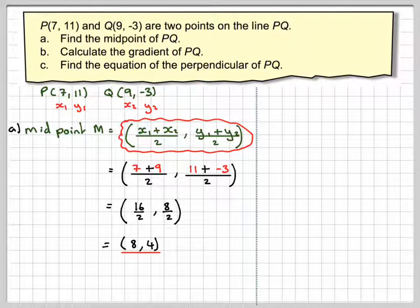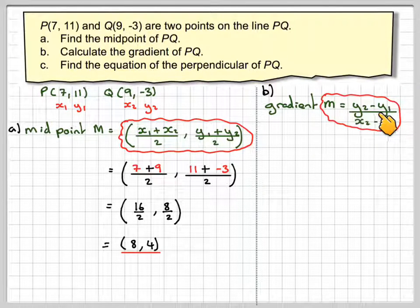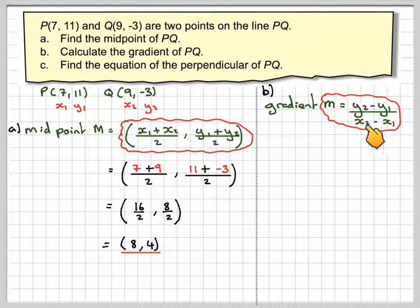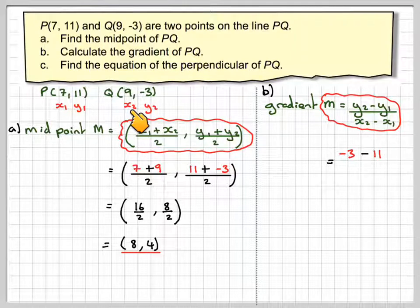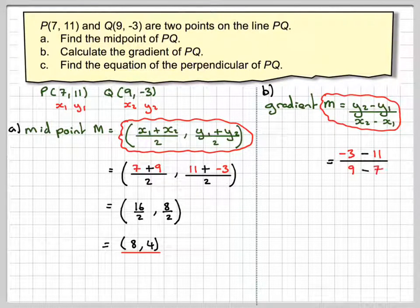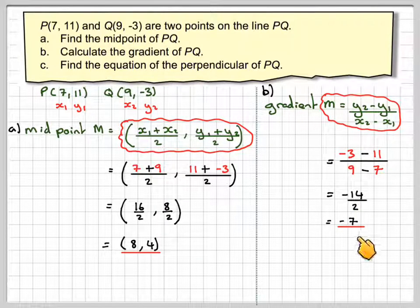For the gradient, to find the gradient between two points, you do Y2 minus Y1, divided by X2 minus X1. So it's going to be minus 3 minus 11, divided by 9 minus 7. Minus 3 minus 11 is minus 14. 9 minus 7 gives you 2. Minus 14 divided by 2 gives you minus 7.